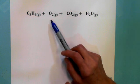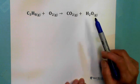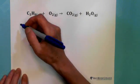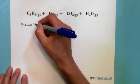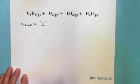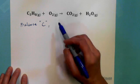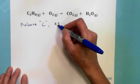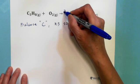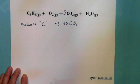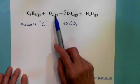For the first example, C3H8 reacts with oxygen to produce carbon dioxide and water. Step one: balance carbon. Before the reaction there are three carbons; after the reaction CO2 has one carbon. That's why we multiply CO2 by three to get three carbons on both sides.